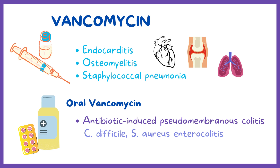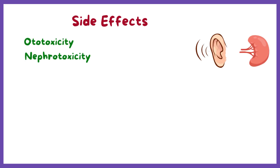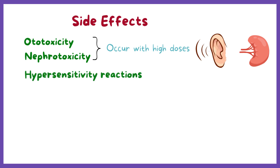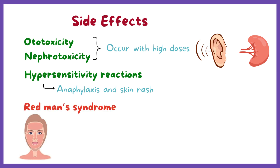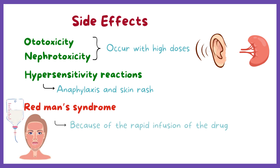Vancomycin may be associated with some serious side effects, including ototoxicity and nephrotoxicity, which are rare but can occur with high doses. It may also cause hypersensitivity reactions manifested by symptoms such as anaphylaxis and skin rash. Another characteristic side effect is Red Man's syndrome — facial flushing and hypotension owing to too rapid infusion of the drug, which can be managed by reducing the infusion rate.